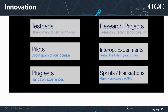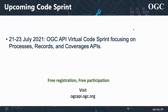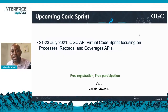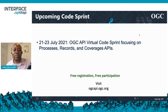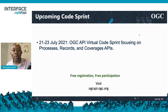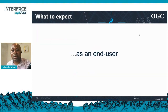We run about five to eight code sprints a year. The next code sprint is going to be July 21st to the 23rd, focusing on OGC APIs for processes, records, and coverages. Registration and participation in OGC API virtual code sprints is free, and you can find more information on the ogcapi.ogc.org website.